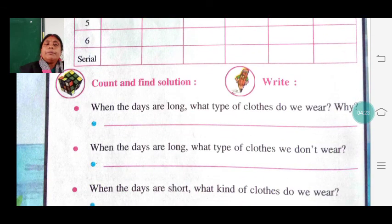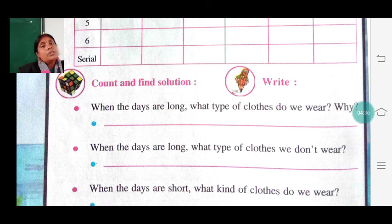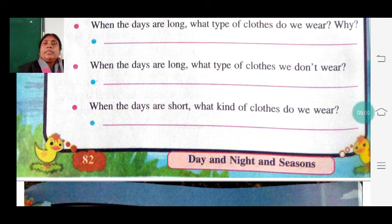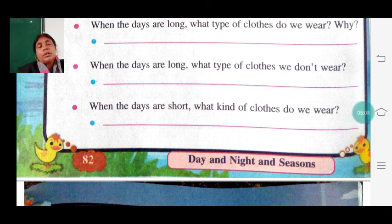When the days are long — in the months of March, April, May, June — it is the summer season. The day can stretch from 6 AM to around 8 PM, making it a very long day. During that time we wear cotton and light clothes because it is very hot. We never wear heavy woolen clothes in summer.